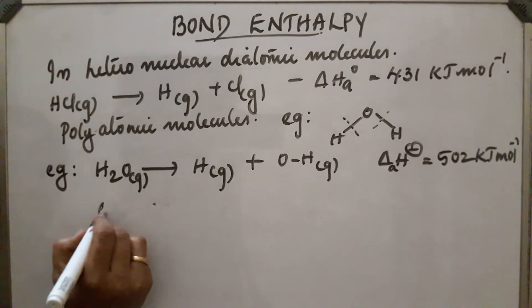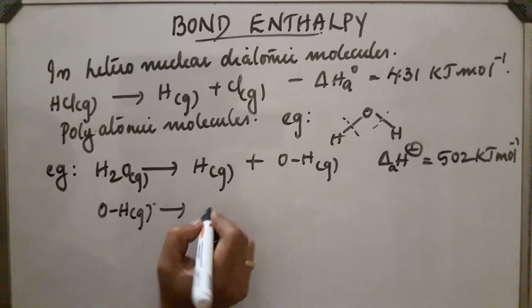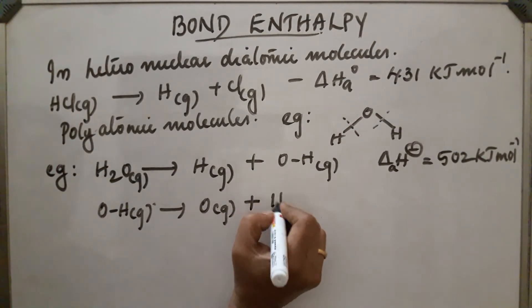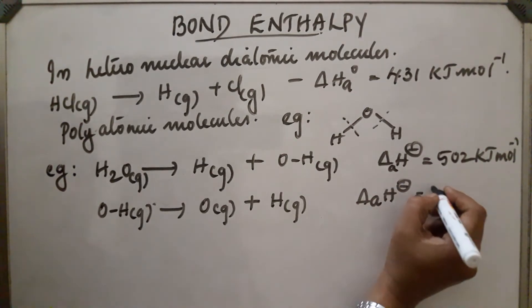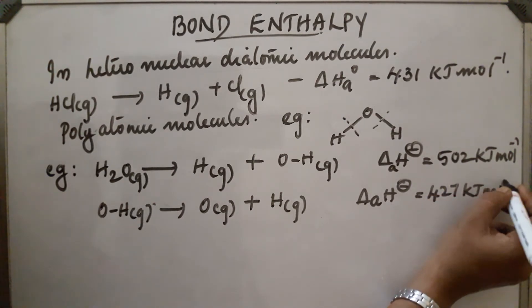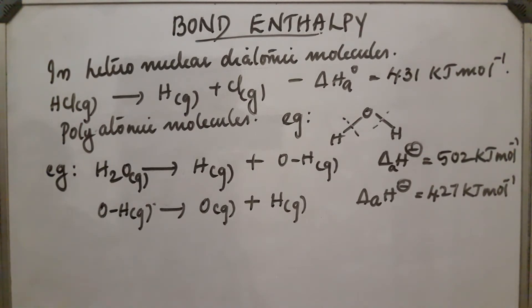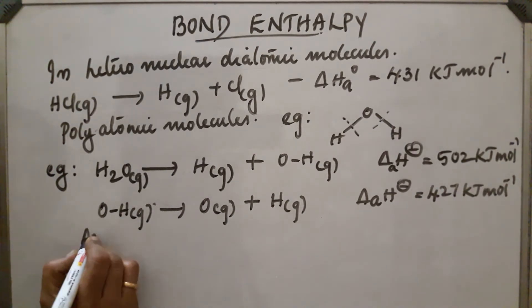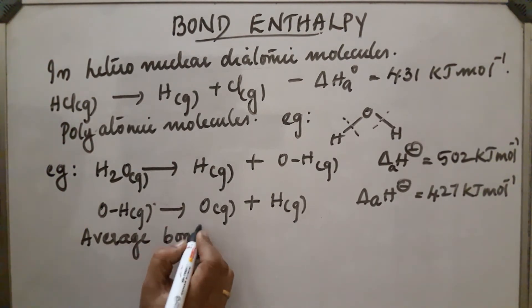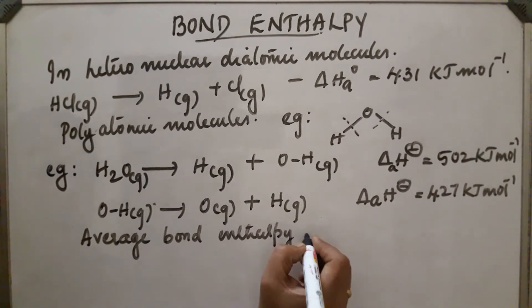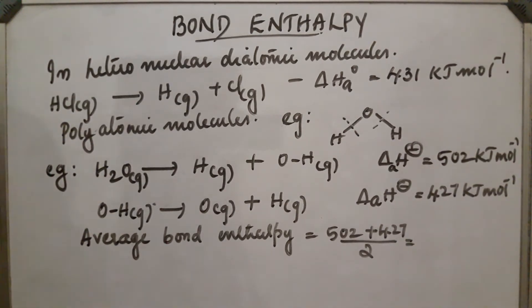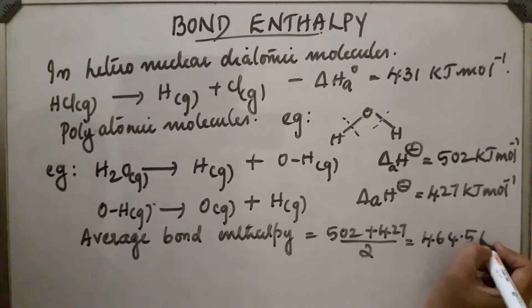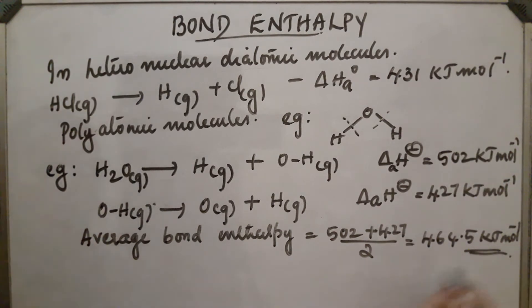Then the OH bond breaks to form oxygen atom and hydrogen atom, and the bond dissociation energy is equal to 427 kilojoule per mole. There is a difference between these two bonds. So in such cases we have to take the average bond enthalpy, which is equal to (502 + 427) / 2 = 464.5 kilojoule per mole.